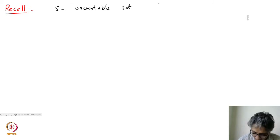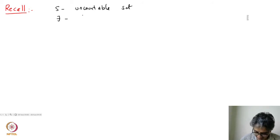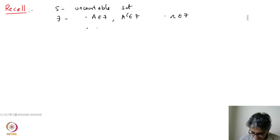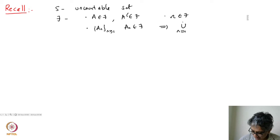we couldn't assign probability like we did in the discrete setup. So we had a special definition for events — these are subsets, a collection of subsets which satisfy the following property: if A is in F then A complement is in F, and the whole space was in the collection F. And if A_n were a sequence of events in F, that would imply that the union of the collection is also in F. This is what we called our events.